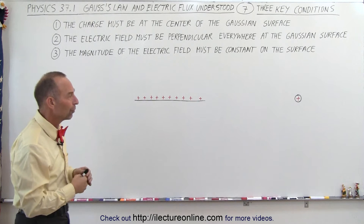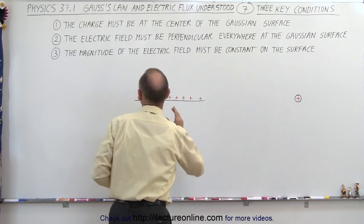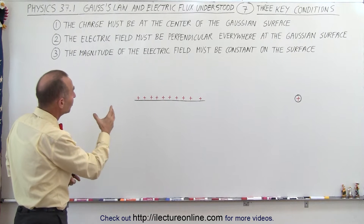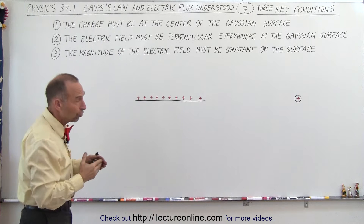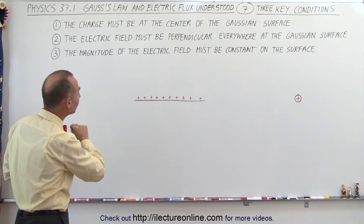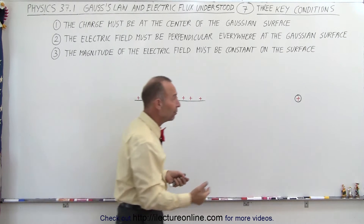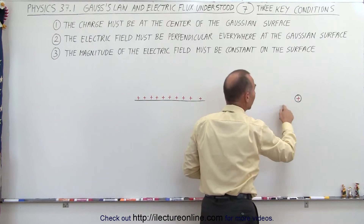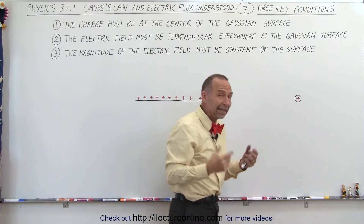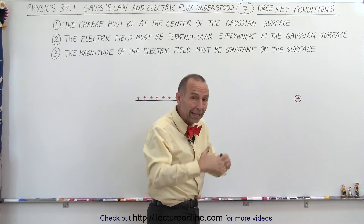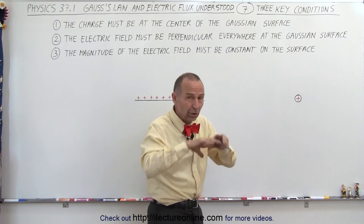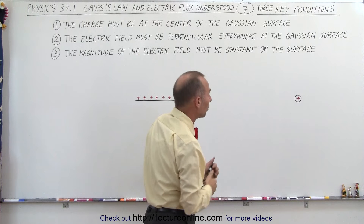We're going to draw a Gaussian surface around a single point charge. The conditions are: the charge must be at the center of the Gaussian surface, whatever it may be. The electric field must be perpendicular everywhere at the Gaussian surface, so the electric field lines should go through the Gaussian surface perpendicular to the surface. And the magnitude of the electric field must be constant on the surface. For example, if we draw an oval, sometimes the surface would be farther away from the charge and sometimes closer, so the electric field strength cannot be equal anywhere along the surface — an oval-shaped Gaussian surface would not work in this case.